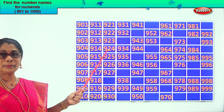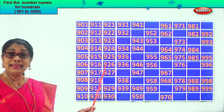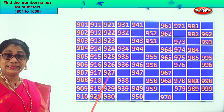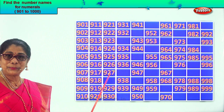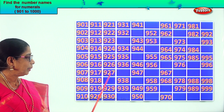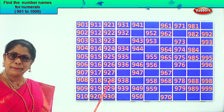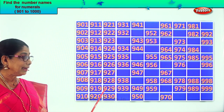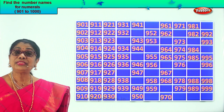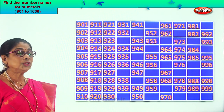The next missing number: 925, 926, 927. After 27, 28. So we get 928, the next missing number. 929, 930.